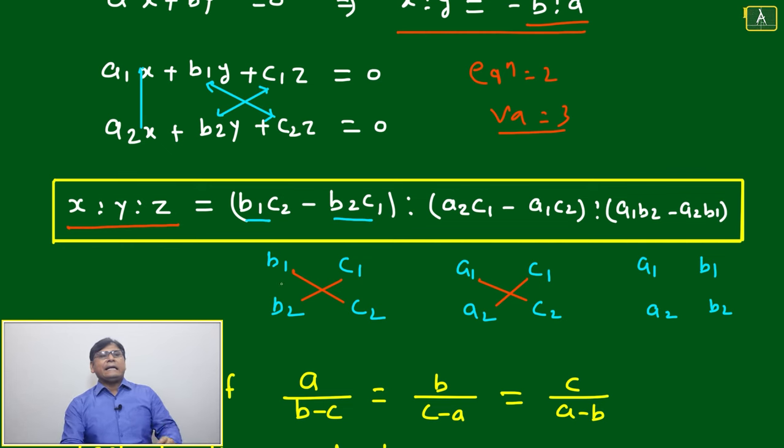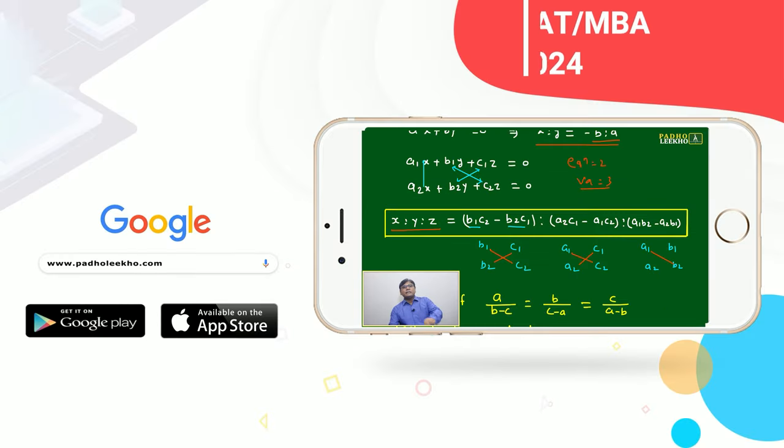Whichever order you are following, you can follow in an alternative way. Like here we have taken b₁c₂ minus b₂c₁, then here you just take a₂c₁ minus a₁c₂. Again, you take the same format: a₁b₂ and b₁a₂, just plus minus plus, nothing else.